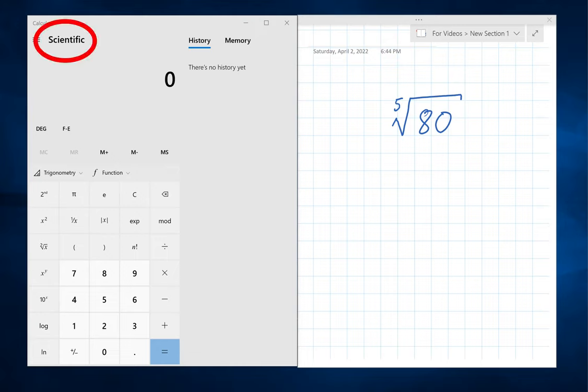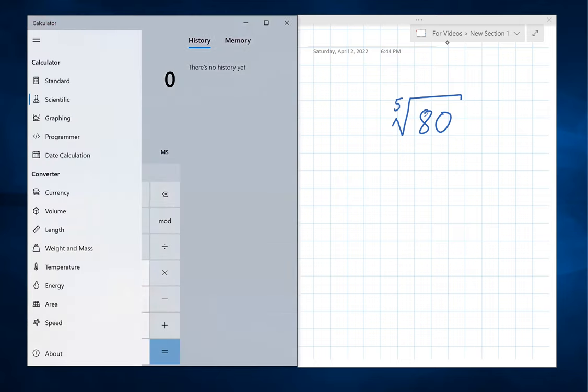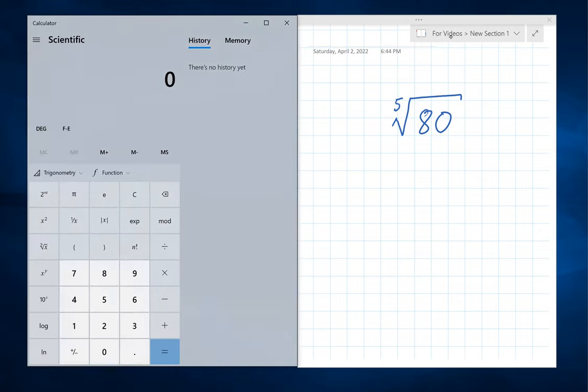If it doesn't, click on the menu icon. It looks like three little horizontal bars. A menu opens up. Choose scientific right here. Click on that. Now you have the scientific calculator.